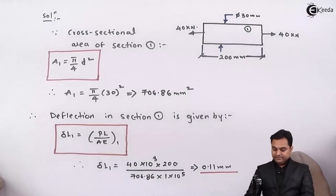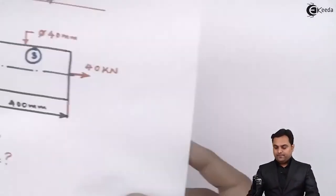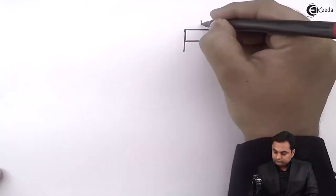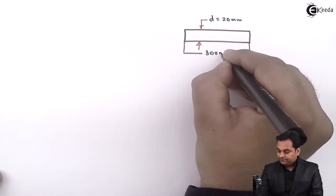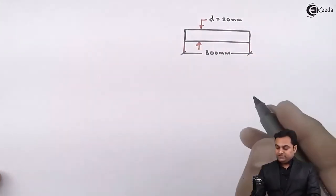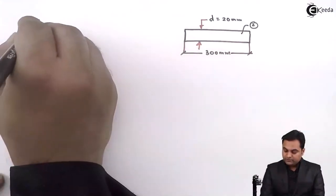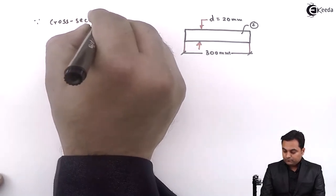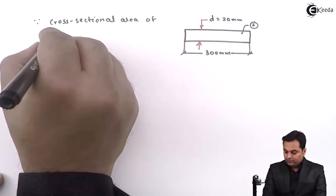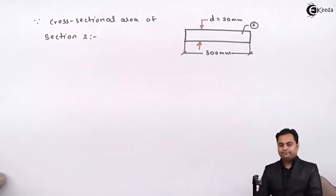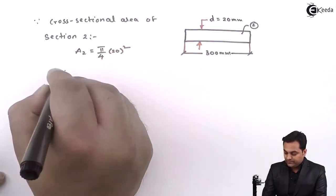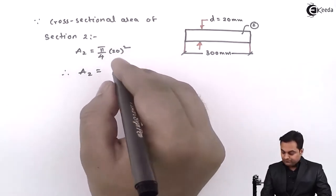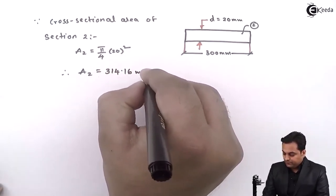Similarly, separating section two: it has a diameter of 20 mm and a length of 300 mm. Cross-sectional area A2 = π/4 × 20² = 314.16 mm².